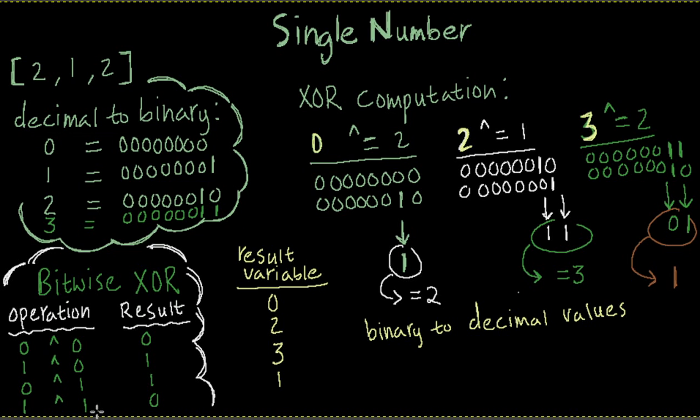But if the bits are same as can be seen here, 1 XOR 1 or 0 XOR 0, it returns 0.